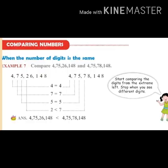I hope you all understand how to write the number name in the Indian place value system. Next: comparing numbers. If the number is small, we can easily know which is greater and which is smaller. But if it is a large number, how do we compare? For example, in question seven they have given two large numbers. First count the number of digits — both numbers are eight digits. Then start comparing the digits from the extreme left, one by one.